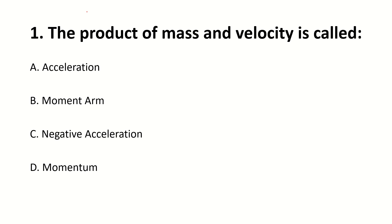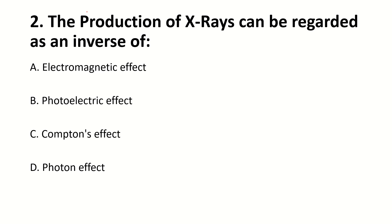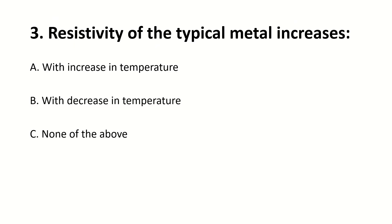Mass and velocity is called dash. Right answer is momentum. The production of X-rays can be regarded as an inverse of dash. Right answer is photoelectric effect. Resistivity of the typical metal increases dash. Right answer is with increase in temperature.